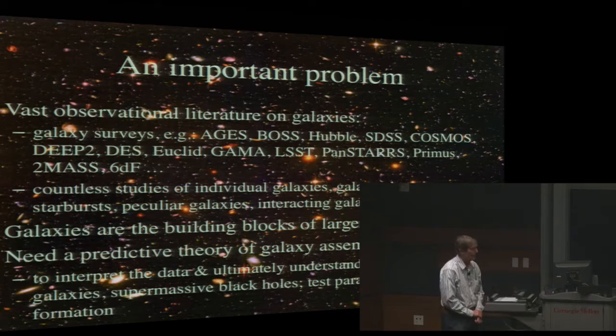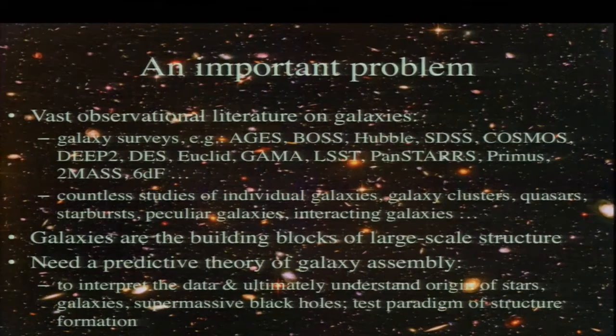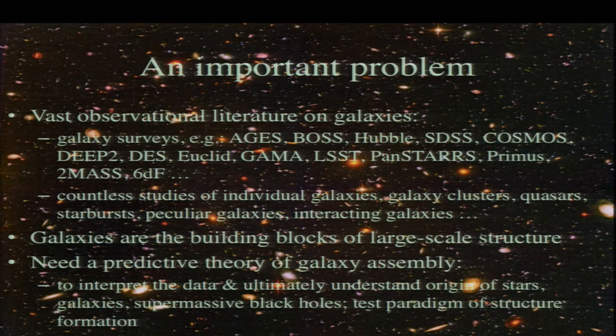This is a very important problem because there's a huge literature on observational studies of galaxies, including large surveys like the Sloan survey, as well as ongoing and planned ones. In addition, we have large numbers of studies of individual galaxies in different contexts: isolated galaxies, galaxies in groups and clusters, peculiar galaxies like quasars and starburst galaxies, and merging galaxies. If we want to look at the large-scale structure of the universe, one of the most direct ways is by looking at the light we see from galaxies.